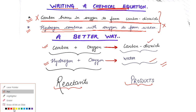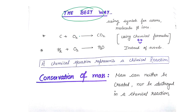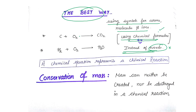The best way for representing a chemical equation is using symbols for atoms, molecules, and ions — that is, using chemical formulas instead of words. Words are too lengthy and messy. For example, the same equation can be written as C + O₂ → CO₂ because C stands for carbon and O₂ stands for oxygen. This is a more precise way to represent a chemical equation.